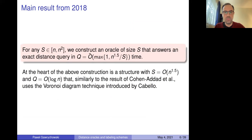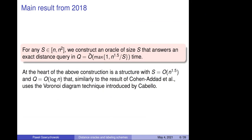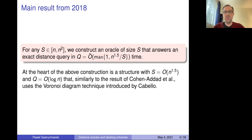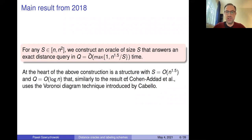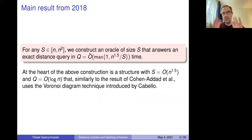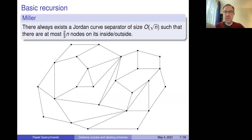I'll briefly discuss this result. For any space bound s between n and n², we can construct an oracle of size s with query time n^(1.5)/s times some log factors. The tradeoff is not very hard once you do the case s = n^(1.5), so I'm only going to discuss that: space equal to n^(1.5) and query time O(log n). This uses a nice technique introduced by Cabello involving Voronoi diagrams on planar graphs. But first I'll show the basic tool used in essentially all planar graph algorithms.